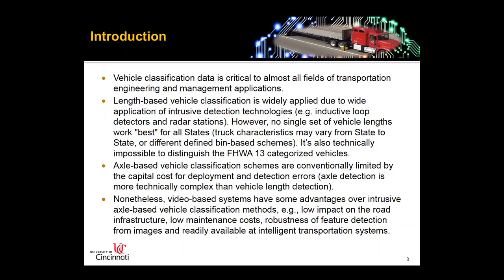Because of the widely application of intrusive detection technology, like inductive loop detectors and road stations, no single set of vehicle lengths works best for all states. Traffic characteristics may vary from state to state using different length-based schemes. It is also technically impossible to distinguish the 13 categories of vehicles as recommended by the Federal Highway Administration. Those standard categories are defined based on the number of axles of each vehicle and the vehicle type.